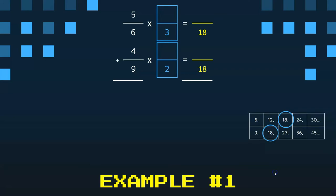So six times three is 18, nine times two is 18. I complete my big giant ones so that I can find the numerators. Five times three is 15, and four times two is eight. I'm now ready to solve by adding those together.